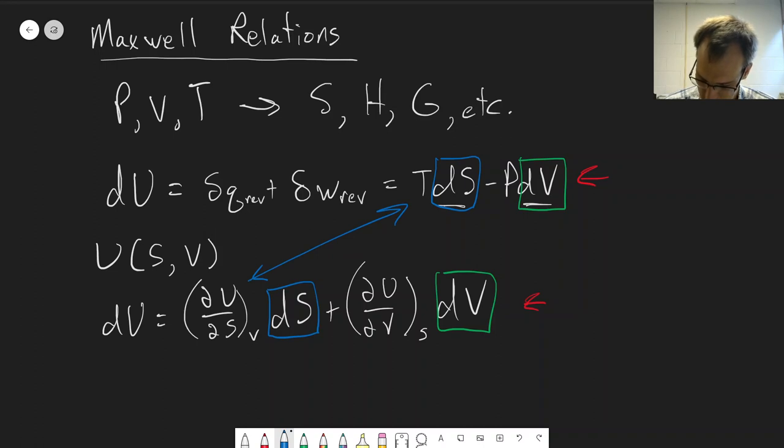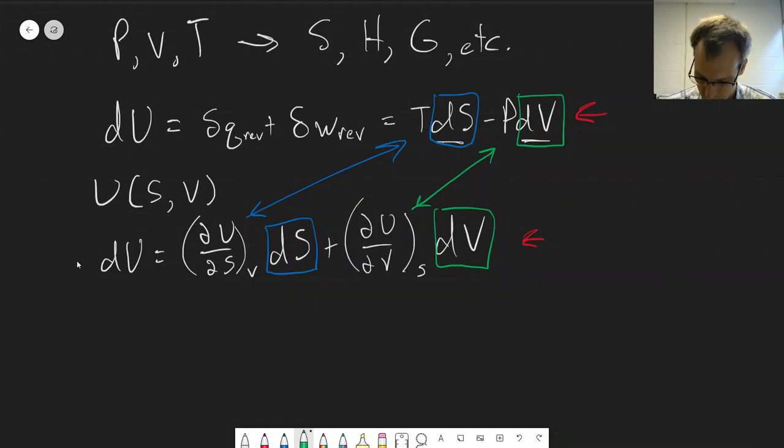So this partial derivative is equal to temperature and this partial derivative is equal to the negative of pressure. So those are two relationships that we can derive here.